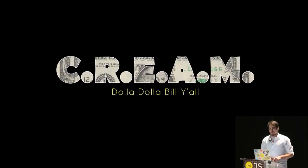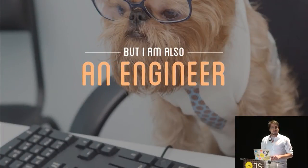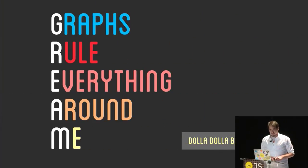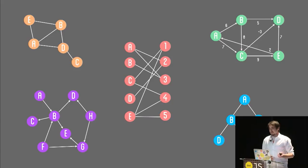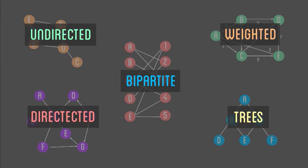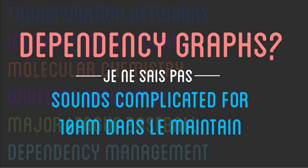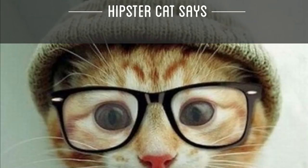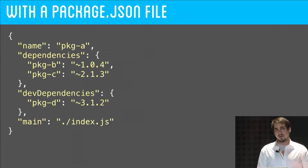Wu-Tang was always about this. But the other thing you need to know about me is that I'm also an engineer, and it turns out there's something else that rules everything around me — and that would be graphs. Dollar dollar bill, y'all. Not this kind of graph, although these are extremely important. I'm talking about these types of graphs. All of these graphs are different depending on what you know about graph theory, and each one is used for a huge variety of different things. But the thing we actually care about is dependency management. So, we need to have some background in how we turn a package.json file into its underlying graph representation.